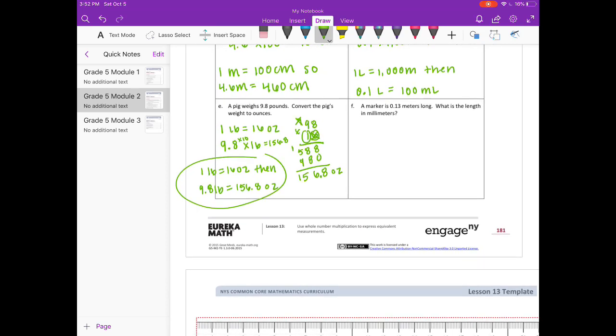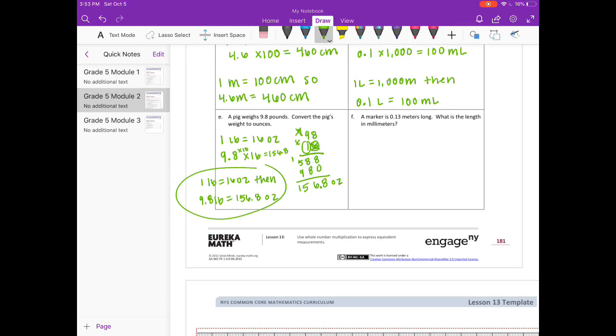A marker is 13 hundredths meters long. What is the length in millimeters? 1 meter is equal to 1,000 millimeters. So 13 hundredths meters times 1,000 is equal to 130 millimeters. So 1 meter is equal to 1,000 millimeters. Then 13 hundredths meters is equal to 130 millimeters.